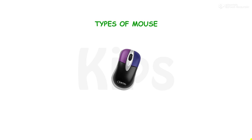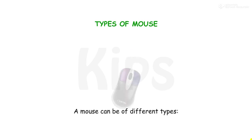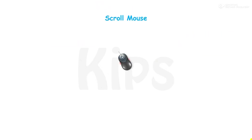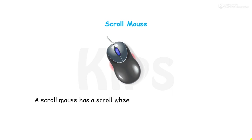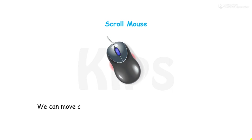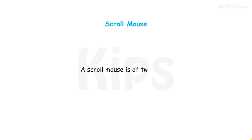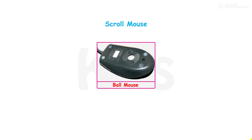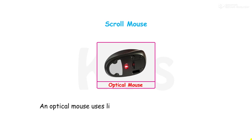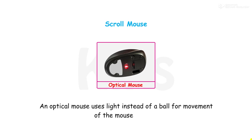A mouse can be of different types: a two-button mouse and a scroll mouse. A scroll mouse has a scroll wheel in the middle of the left and right button. We can move a page up and down by moving the scroll wheel. A scroll mouse is of two types: a ball mouse, which has a ball under it to move the mouse pointer on the screen, and an optical mouse, which uses light instead of a ball for movement of the mouse pointer.